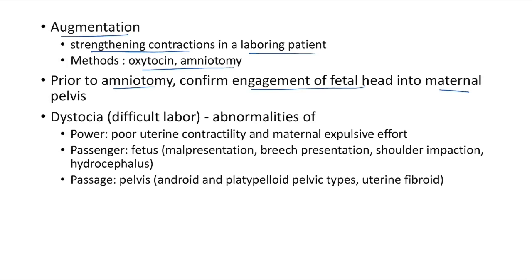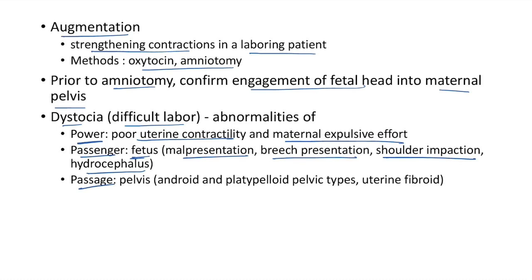Dystocia (difficult labor) can be due to abnormalities of power, passenger, or passage. Power causes: poor uterine contractility and poor maternal expulsive effort. Fetal causes: malpresentation, breech, shoulder impaction, and hydrocephalus. Passage causes: android and platypelloid pelvic types, and uterine fibroids.